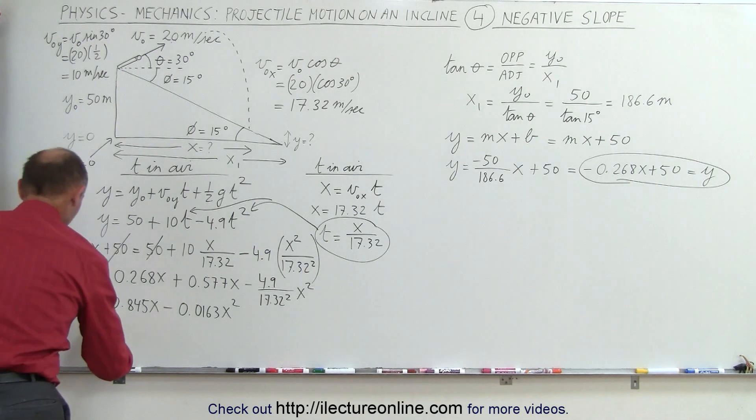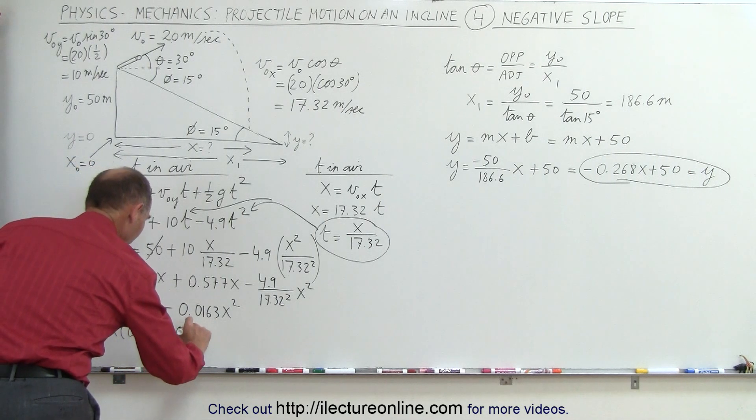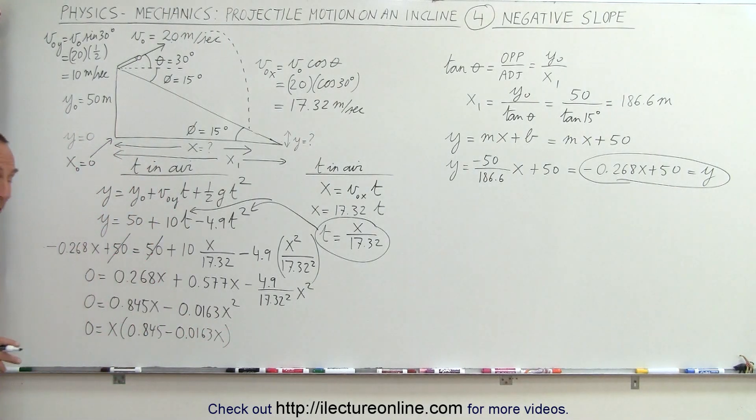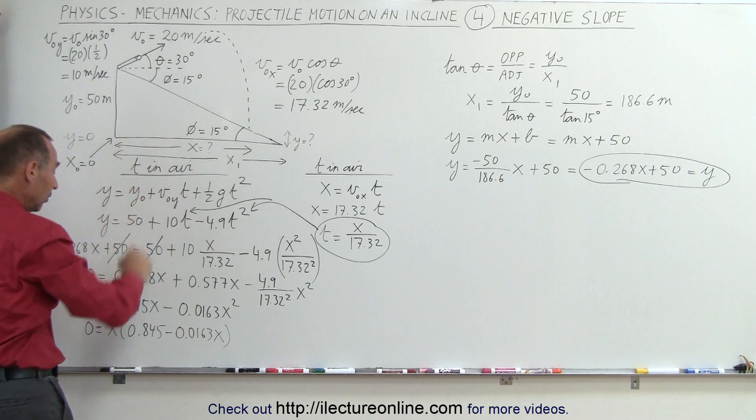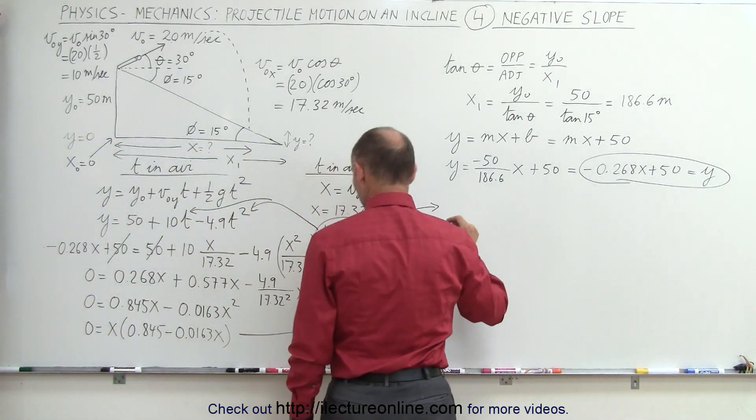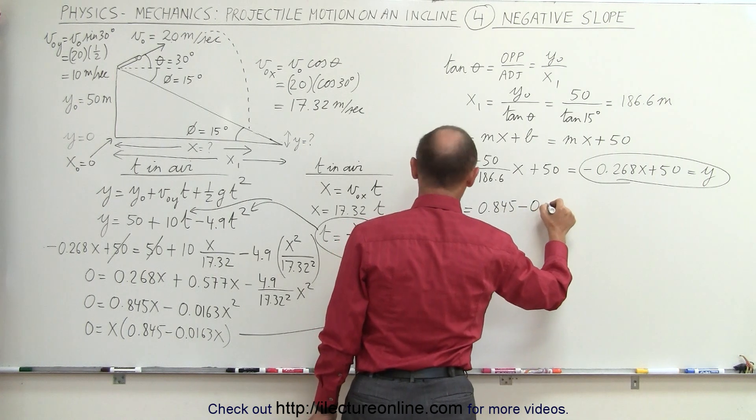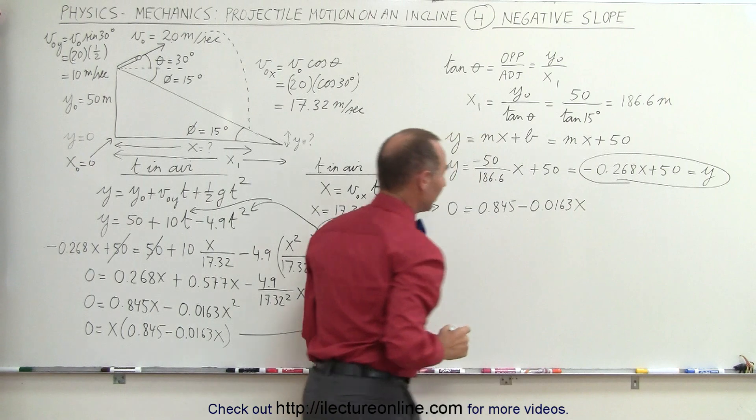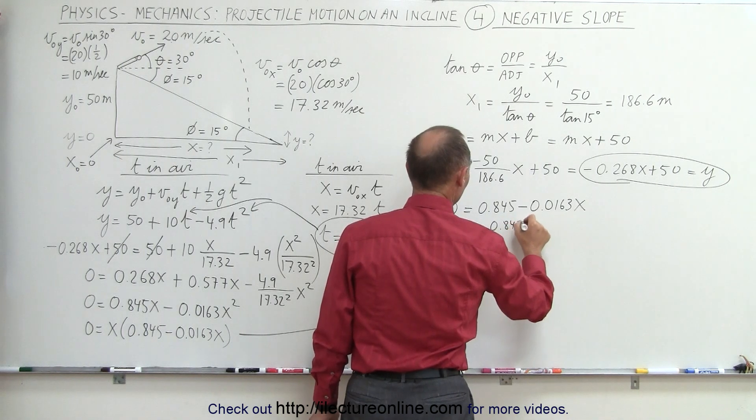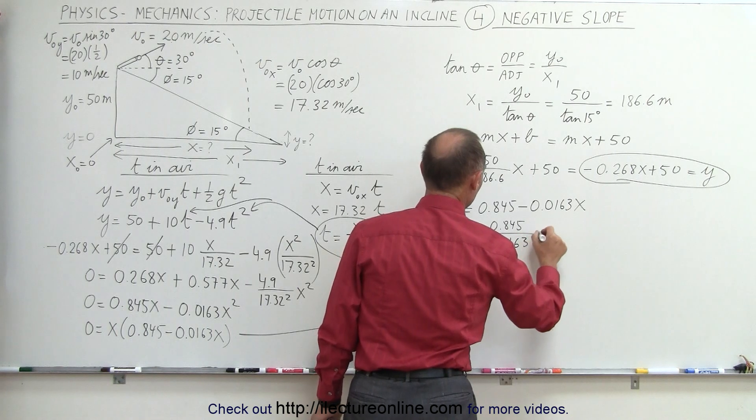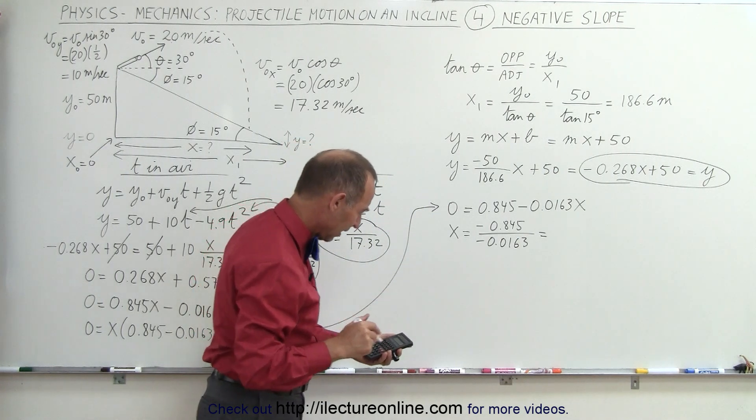Now we're ready to solve that for x it's a simple quadratic equation that doesn't have the constant term which makes it easier. So we get 0 equals x times 0.845 minus 0.0163 x like that and then the only two solutions we can have that x equals 0 which means the starting point it'll be on the inclined plane at x equals 0 and the second value let's come up here we get that when we set 0 equal to 0.845 minus 0.0163 x now we can solve that for x and let's see what we get x is equal to minus 0.845 divided by a minus 0.0163 and times 0.845 equals and that leaves us with 51.7 meters.